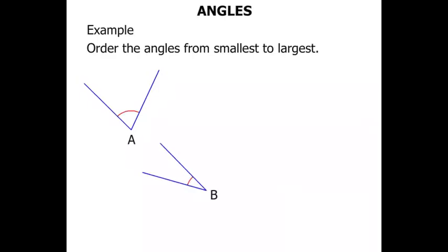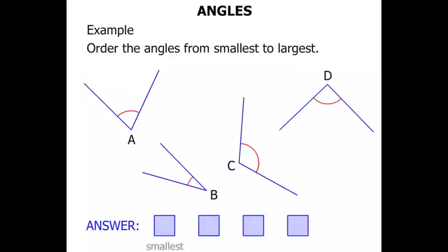Let's look at an example. We're asked to order the angles from smallest to largest. So we've got angle A there, angle B, angle C and angle D. So our answer, we're going from smallest to largest.